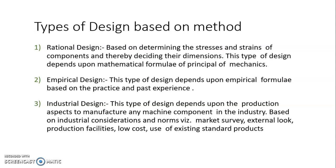Industrial design is quite different from rational and empirical design. It requires knowledge of market survey, the shape and size of the product, available production facilities, proposed cost, and standard products available in the market. Based on all this industrial data, we proceed with the design. Rational, empirical, and industrial designs are the practical classifications of design.